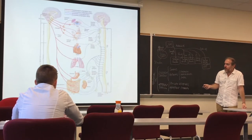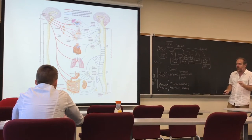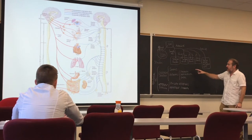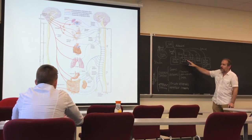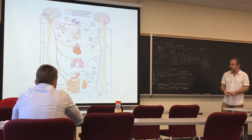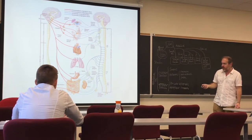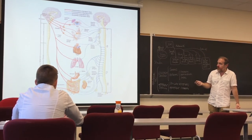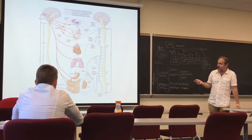All the internal organs of the viscera have what we call dual innervation — they always receive a parasympathetic nerve and a sympathetic nerve. For example, the heart gets both a parasympathetic nerve and a sympathetic nerve.